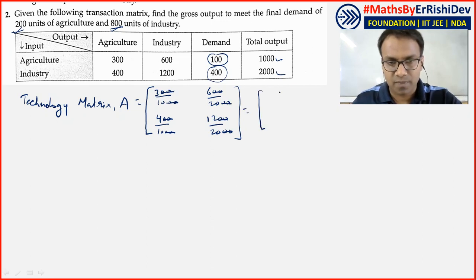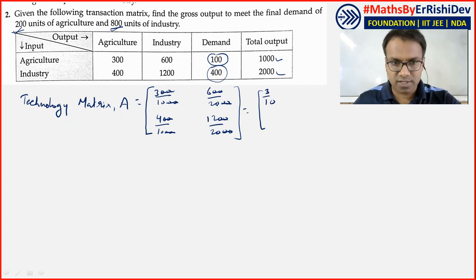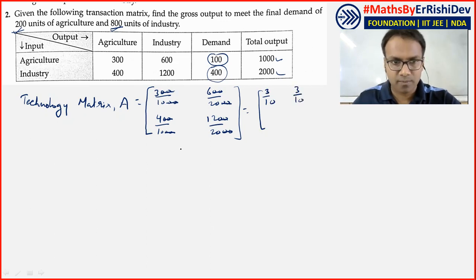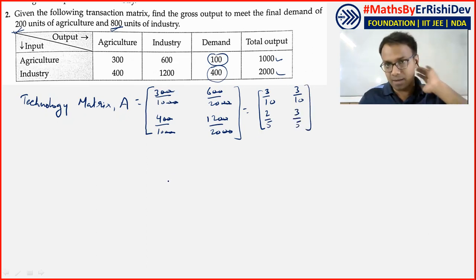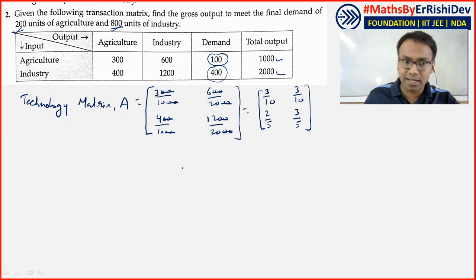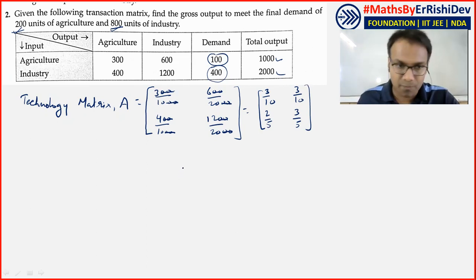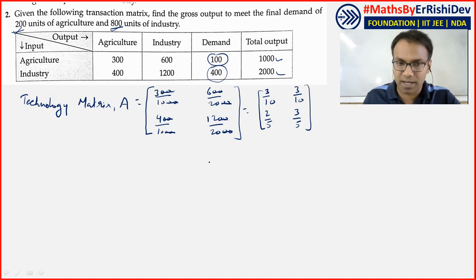Now simplify the fractions: 3/10 cannot be further reduced; 6/20 reduces to 3/10; 4/10 reduces to 2/5; 12/20 reduces to 3/5. So our first task — creating the technology matrix — is complete.